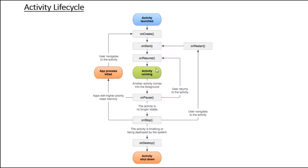The activity then starts interacting with the user again. If the activity is completely invisible to the user, the system calls the onStop method. Even after onStop finishes, an instance of that activity is still available in memory. If the user comes back to the activity after onStop, the system calls the onRestart method.